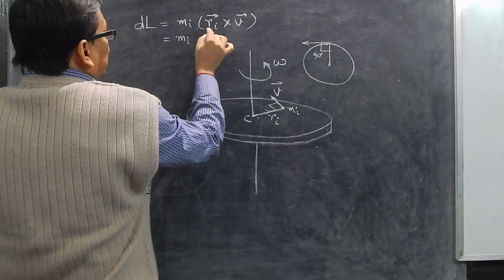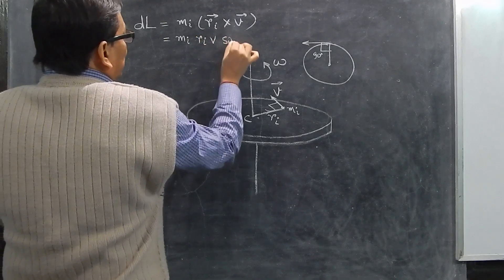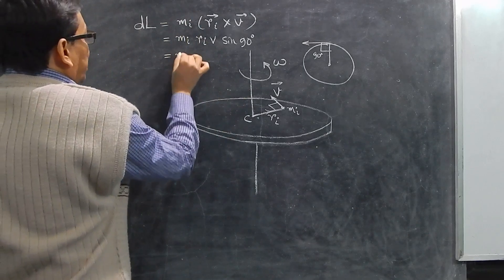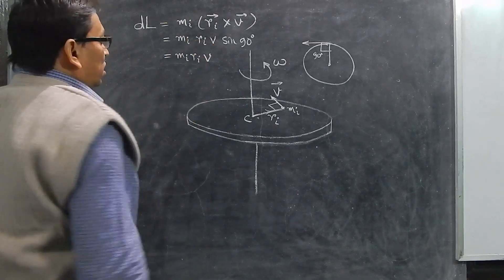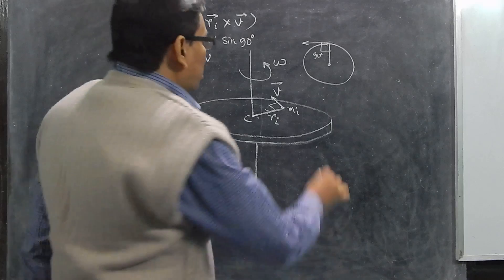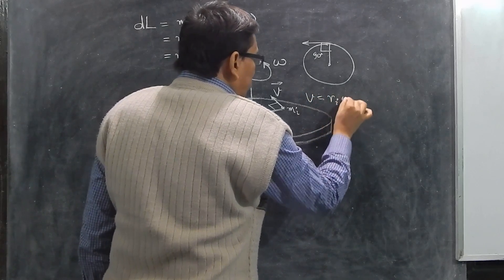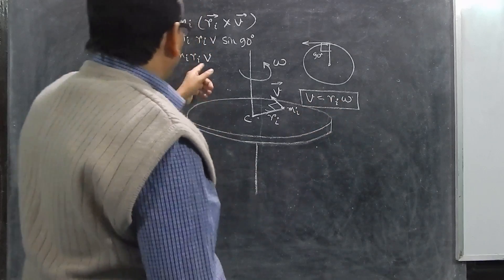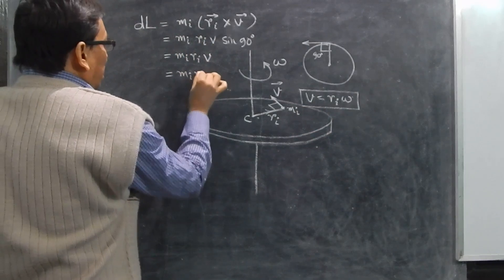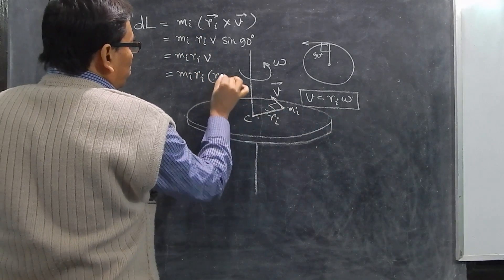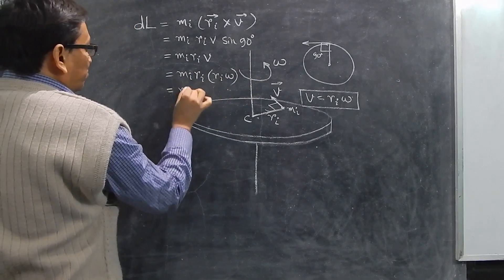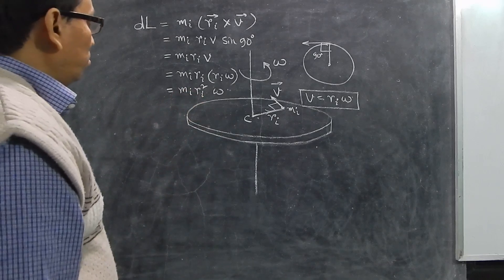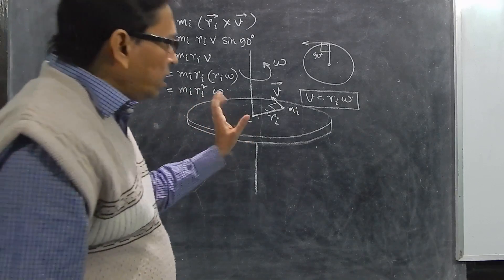So we can write dl = mi × ri × v × sin(90°). Since sin(90°) = 1, this becomes dl = mi × ri × v. For circular motion, v = rω, so in this case v = ri × ω. Substituting, we get dl = mi × ri × ri × ω, which gives dl = mi × ri² × ω.